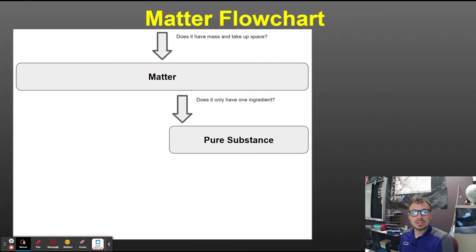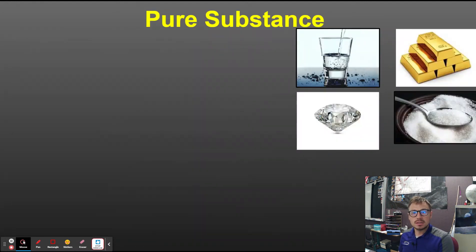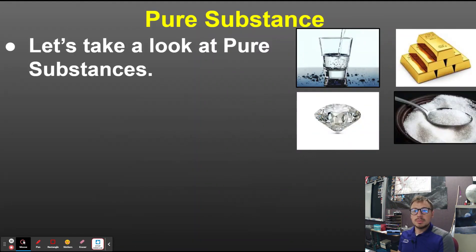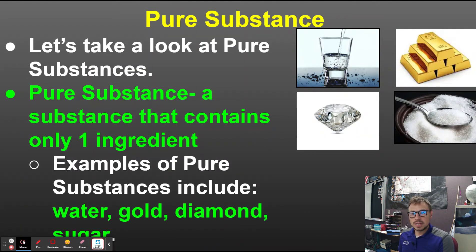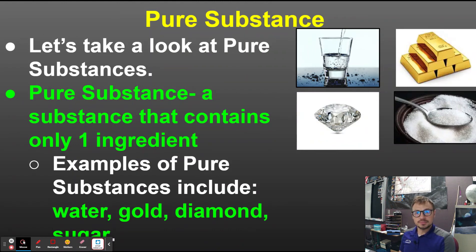We can organize this further. If it is matter, you can ask yourself: does it only have one ingredient? If yes, it's a pure substance. A pure substance is a substance that contains only one ingredient. Examples of pure substances include water, gold, diamond, and sugar.